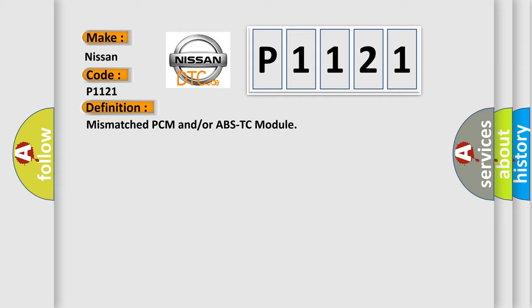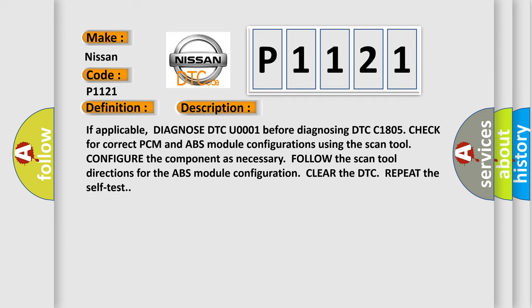Here is a short description of this DTC code. If applicable, diagnose DTC U0001 before diagnosing DTC C1805. Check for correct PCM and ABS module configurations using the scan tool. Configure the component as necessary. Follow the scan tool directions for the ABS module configuration. Clear the DTC and repeat the self-test.